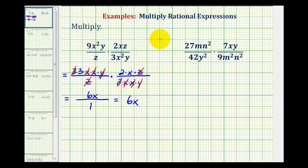Let's take a look at a second example. For the prime factorization of 27, 27 is equal to three times nine, and nine is equal to three times three. So we'll have three factors of three for 27. Mn² is one factor of m and two factors of n.